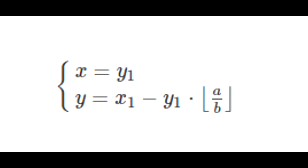Knowing this, we get this equation: X is going to equal Y1 and Y is going to equal X1 minus Y1 times floor of A divided by B.